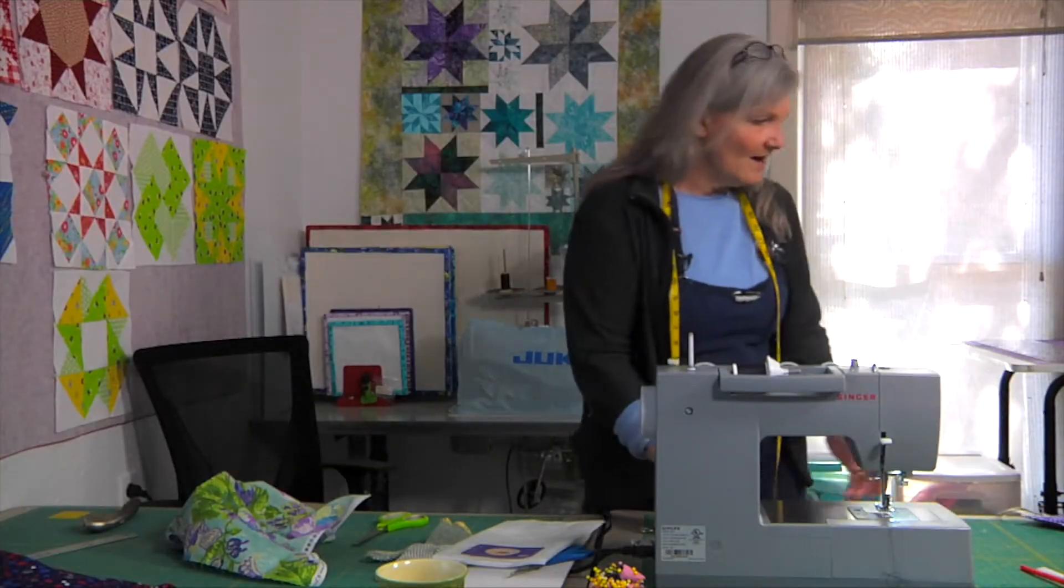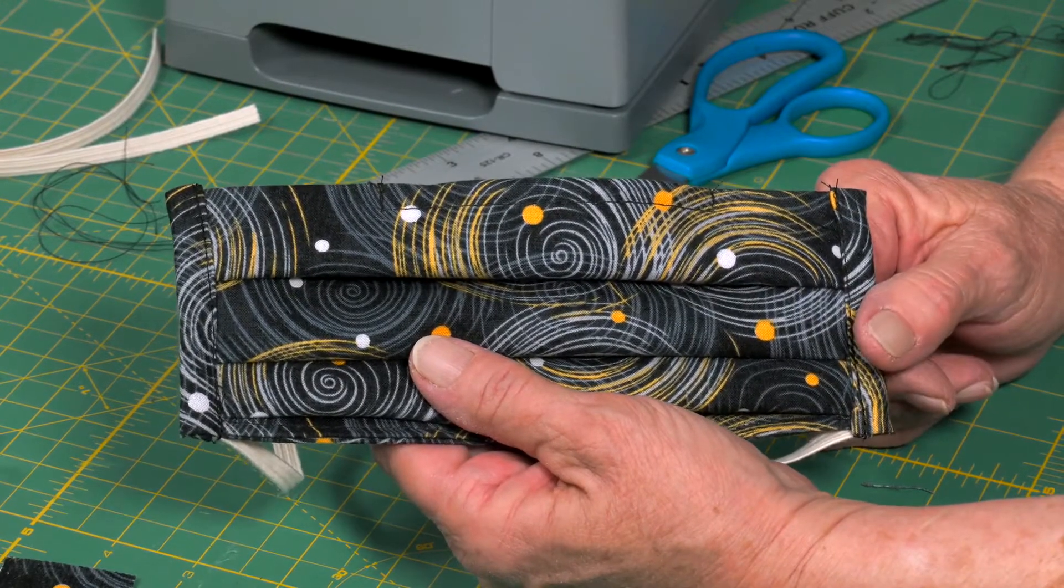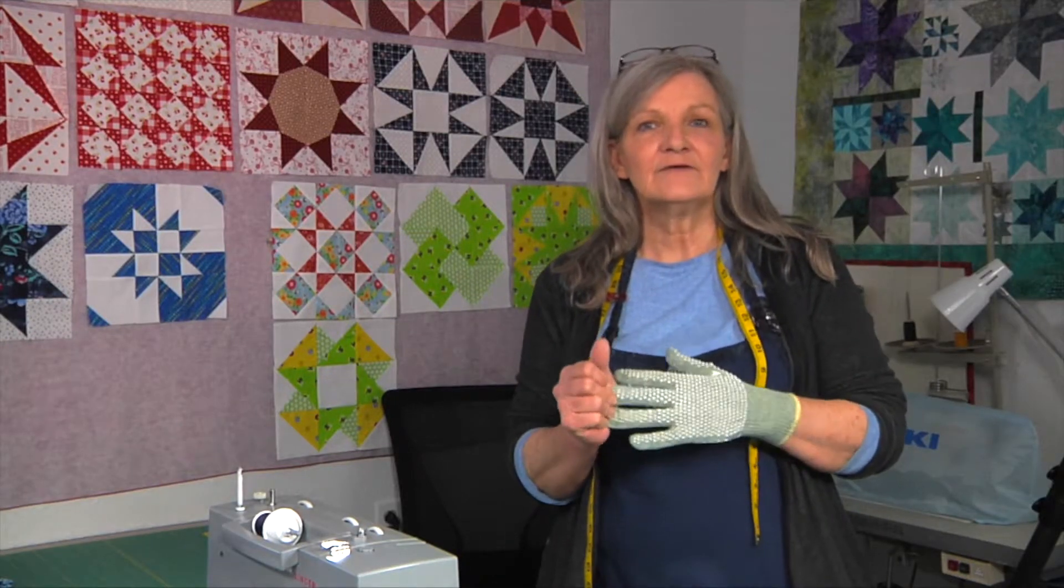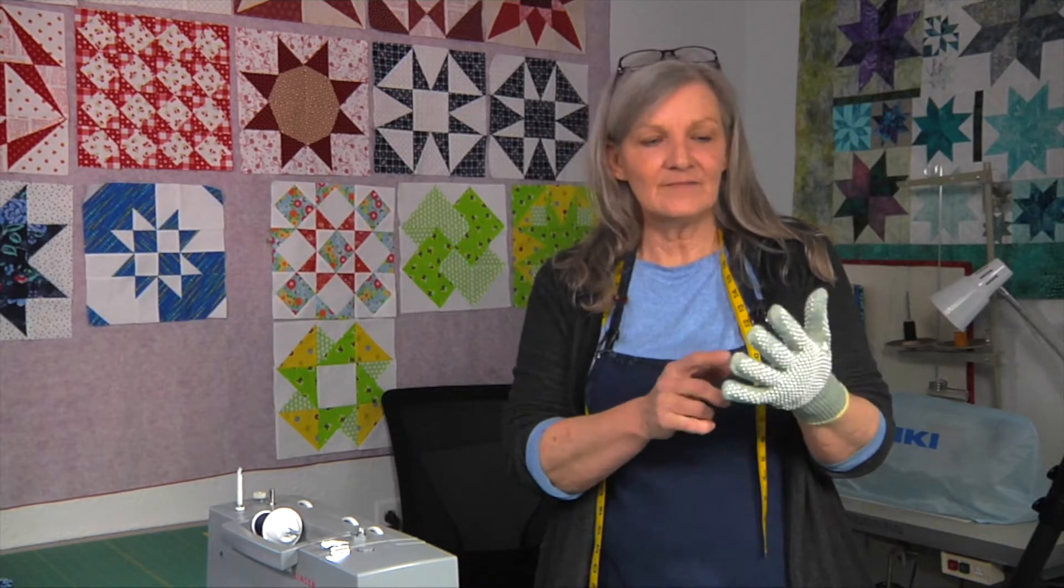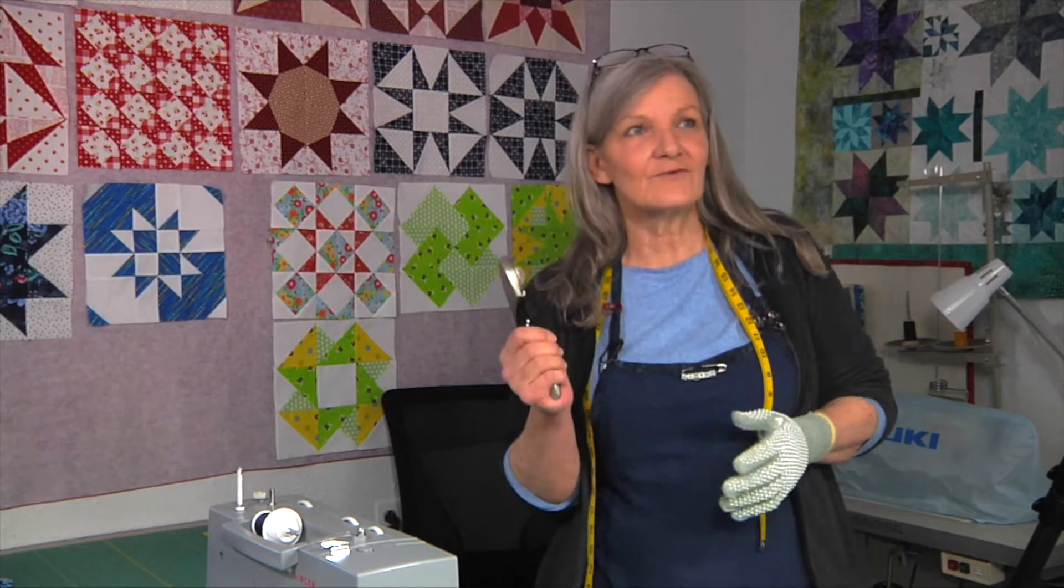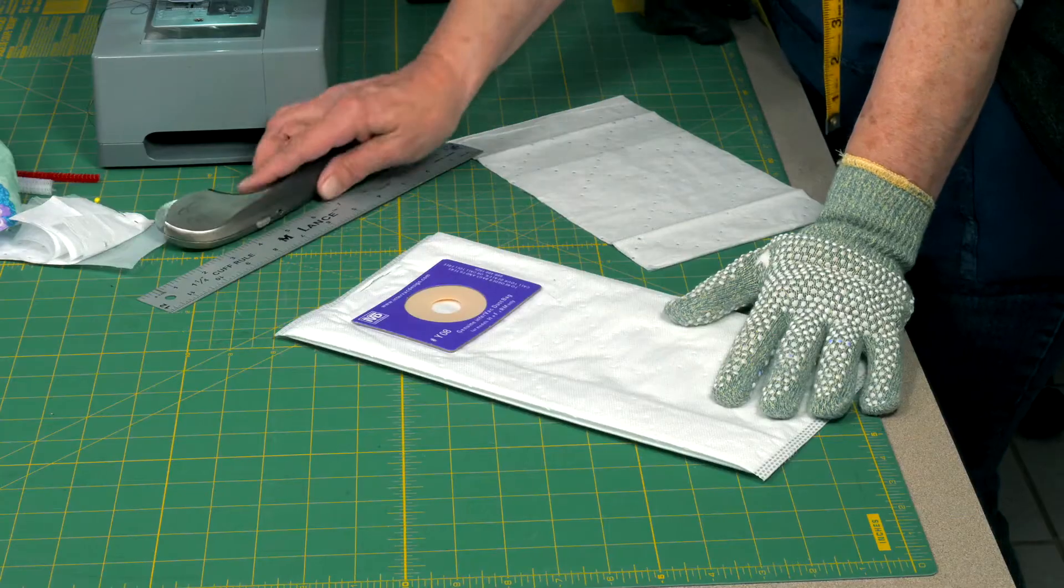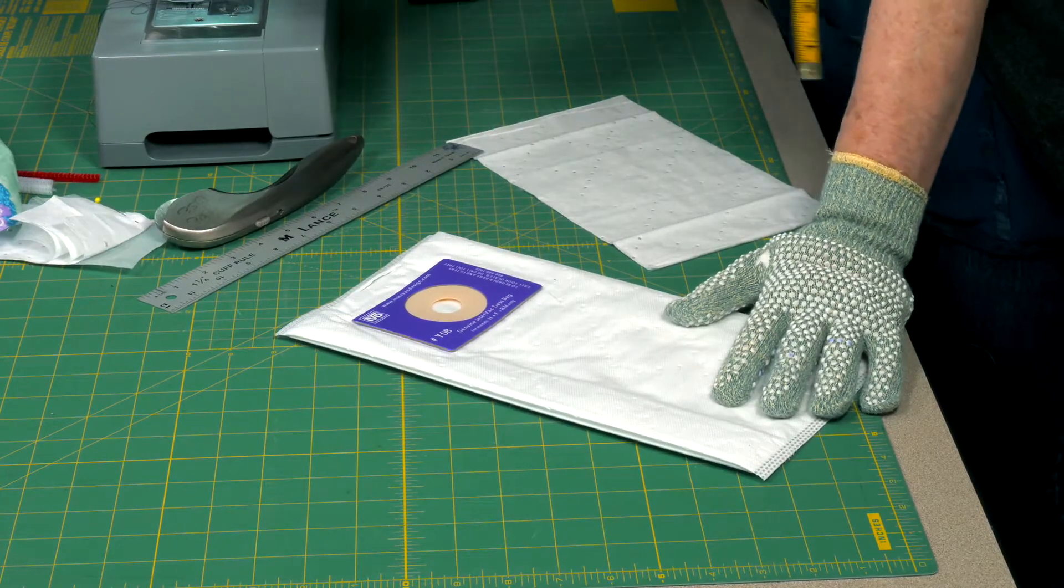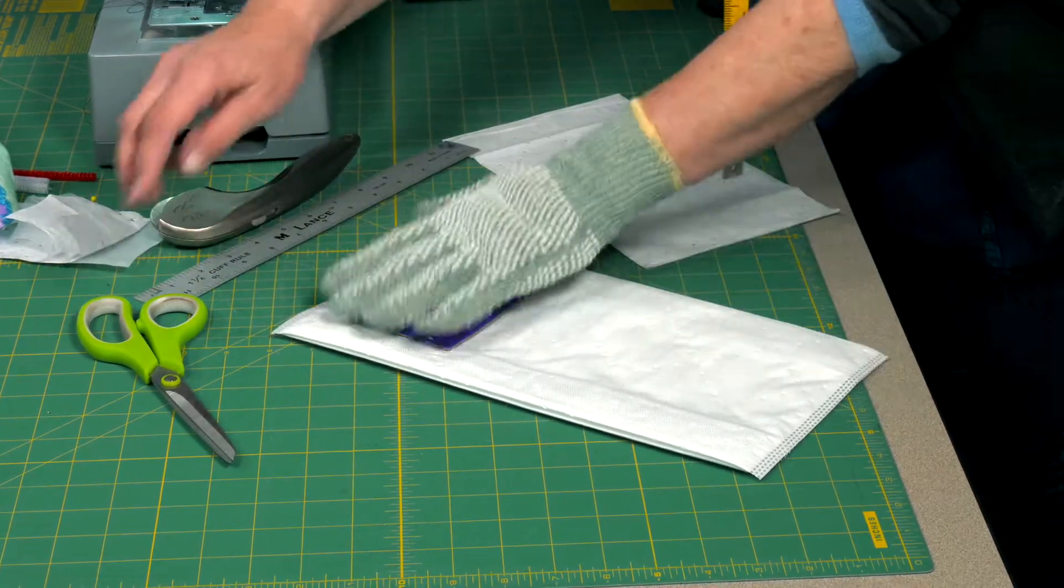So now I'm going to show you how we create our mask. Be sure you use a glove. You can get these at any Joann's store or even online, but this glove we use to keep from getting cut when we use our rotary cutter. You can use the rotary cutter or scissors to cut this. This is pretty thick.